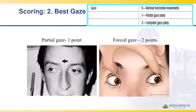For scoring best gaze: if they have normal horizontal movements and can bury the full way, they earn no points. If the patient is looking to one side but one eye still shows some white next to the pupil — a partial gaze palsy — they earn one point. If a patient has a forced gaze only to one side and cannot move their eyes past midline, they have a complete gaze palsy and receive two points.